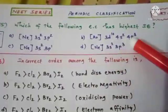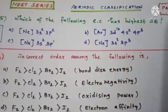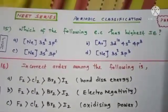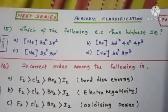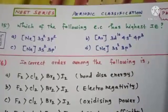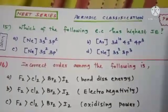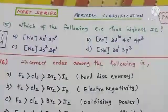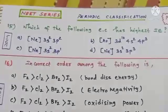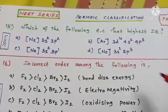For this question, you have to look at the electronic configurations and see whether any of them has either a half-filled or completely filled electronic configuration. The first option is [Ne] 3s² 3p², which is nothing but silicon, atomic number 14.